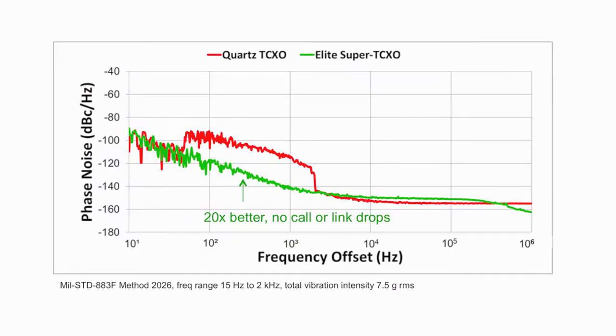This graph shows the phase noise comparison of a quartz resonator versus a MEMS resonator while subjected to a random vibration profile of 7.5g RMS acceleration and vibration frequency 15 Hertz to 2 kilohertz. Phase noise measures noise in the frequency domain and lower values are therefore better.